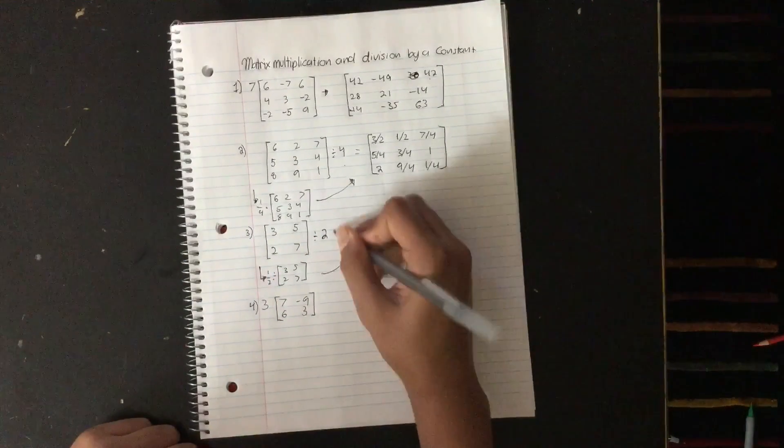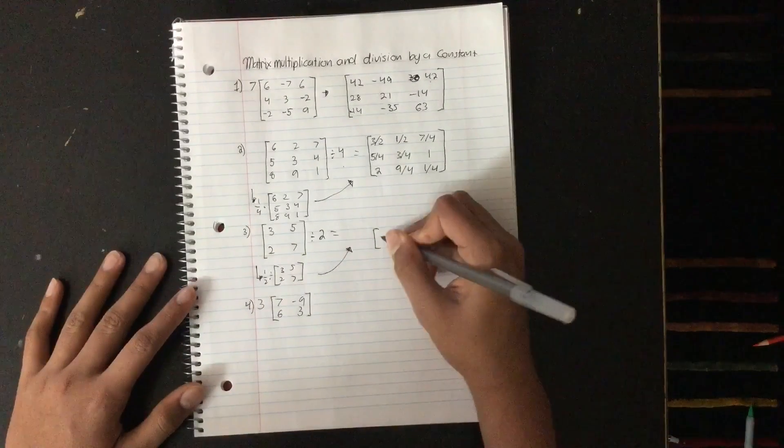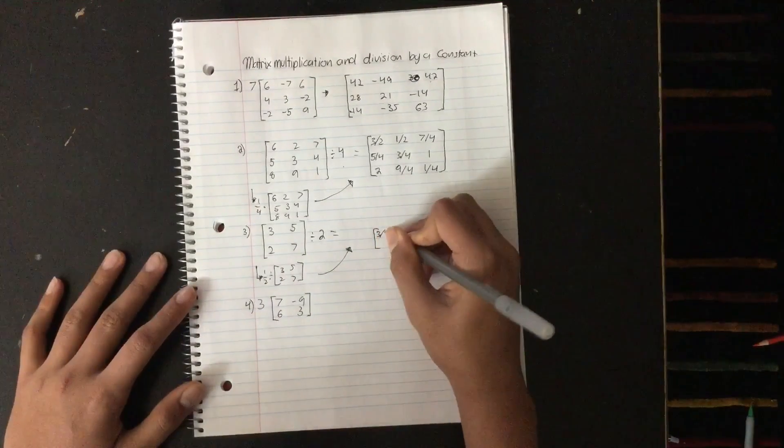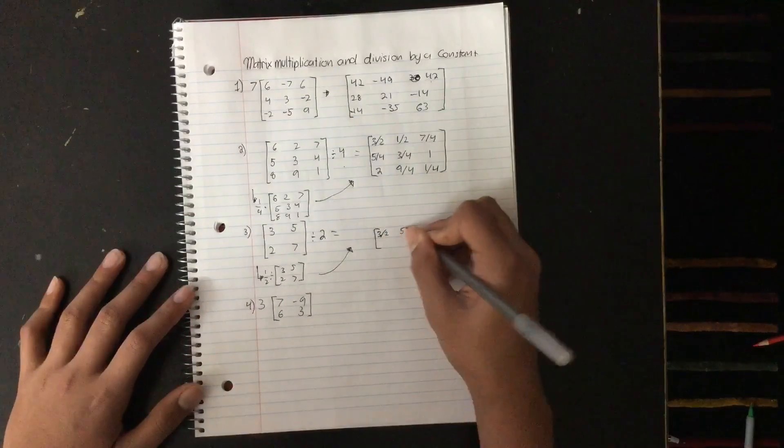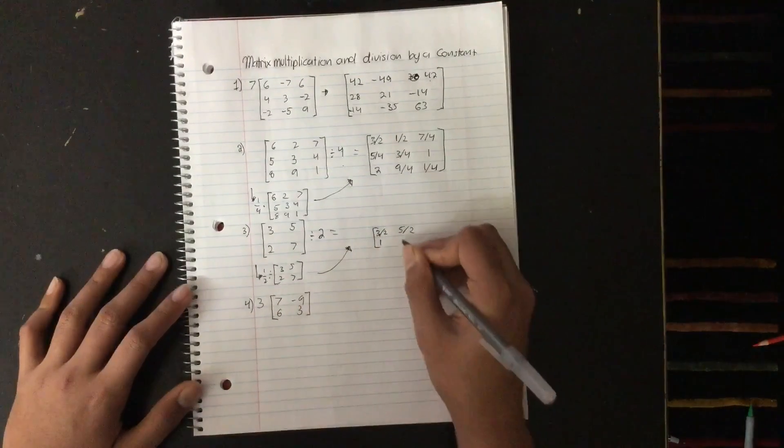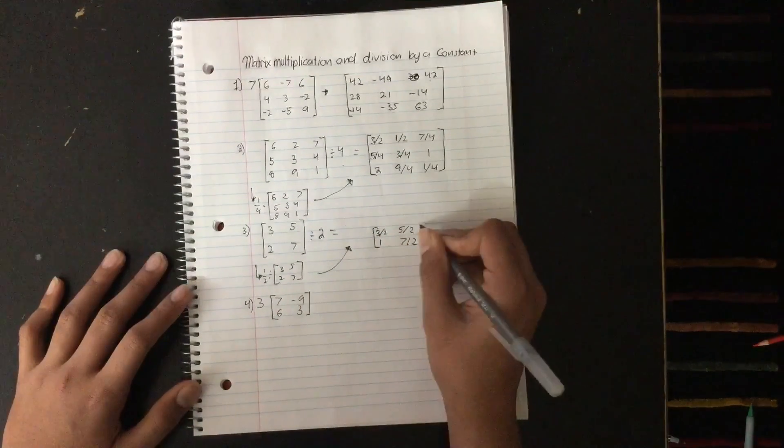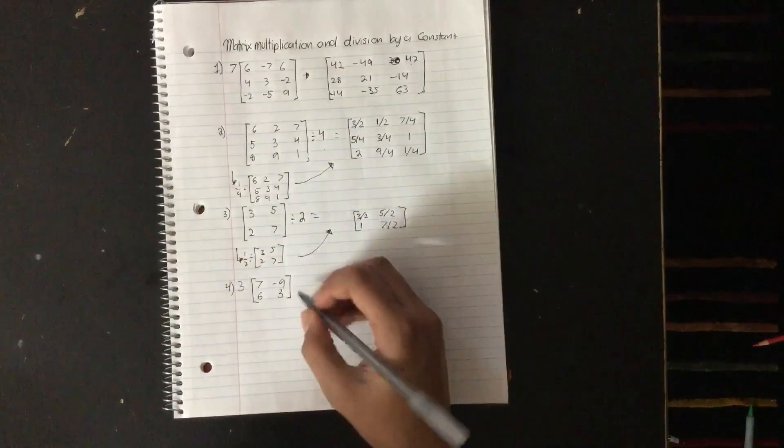And then it's just simple again. So our 2 by 2 matrix will end up looking like 3 by 2, 5 by 2, 1, and 7 by 2. So it's really simple, just easy, just really plain.